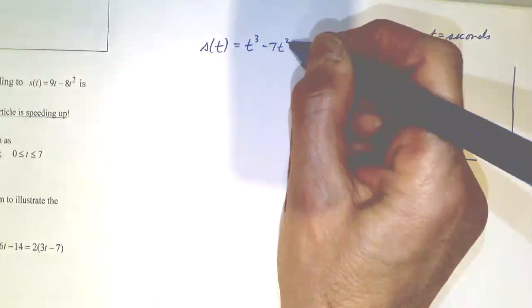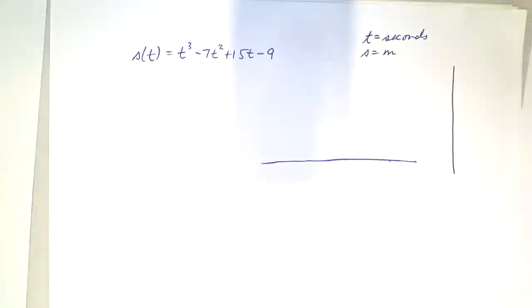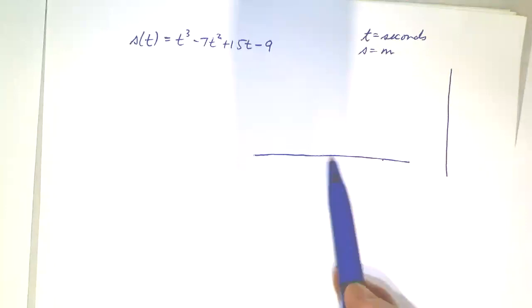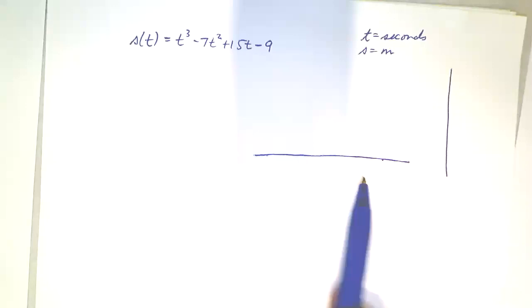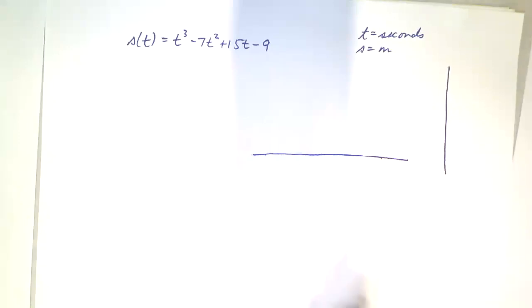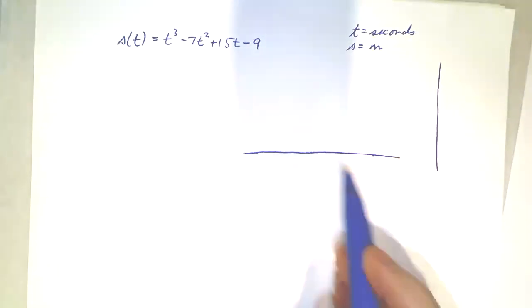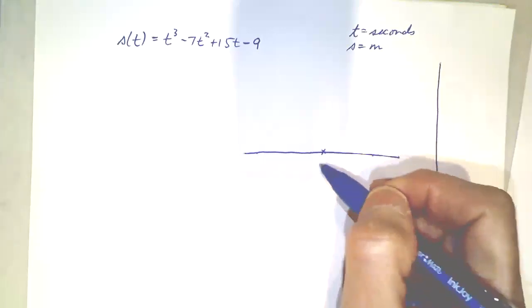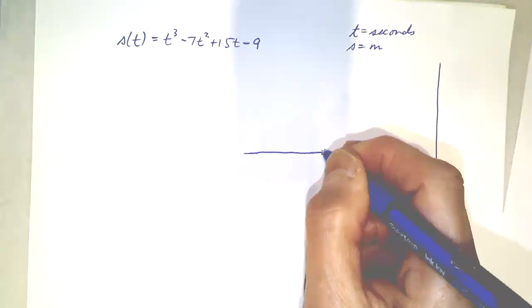This function's job is to tell us the location — the position — of the object at any point in time. I like to use the analogy of a little toy train going to the right and stopping, going back to the left, stopping, going back to the right, and so on, back and forth. Imagine your little brother or sister was playing with it, left it on, walked out of the room, and you walked in and decided to observe its motion. This function will tell you the physical location of that train at any point in time.